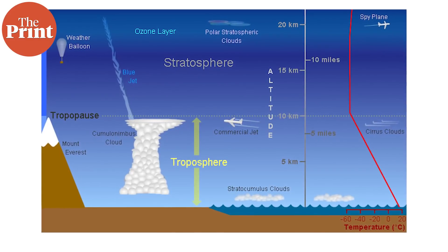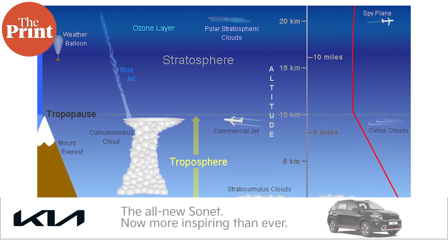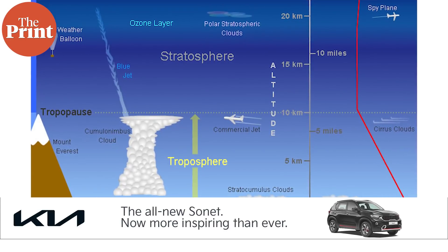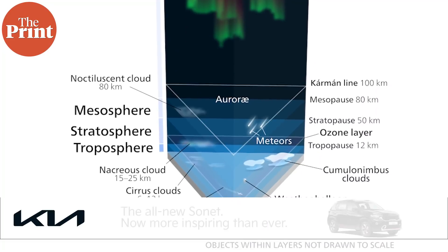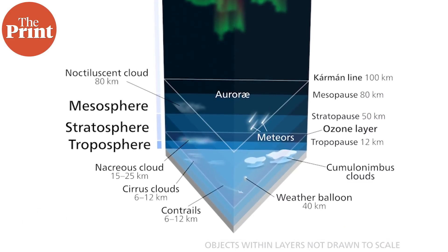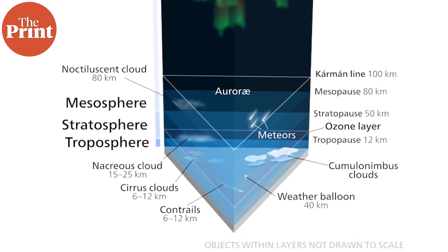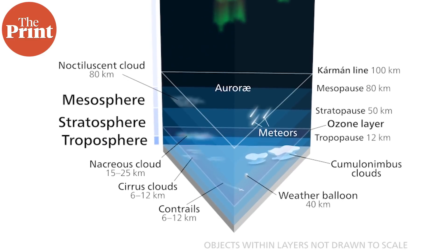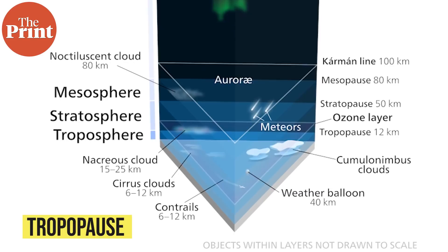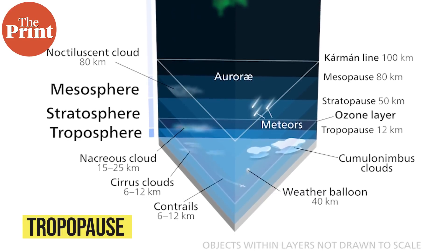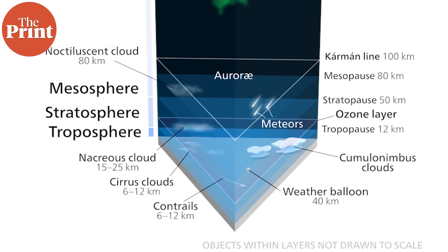The troposphere contains most of our oxygen. It contains three quarters of all the atmosphere that surrounds Earth, and nearly 95 percent of all water vapor that goes up into the atmosphere. Dynamic climate and weather processes are visible at the bottom of the troposphere, which is closer to the surface. The top of the troposphere is called the tropopause, which marks its end. It is about 10 kilometers above the polar regions, and about 18 kilometers above the equator.